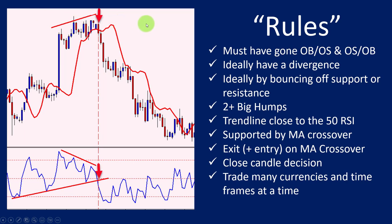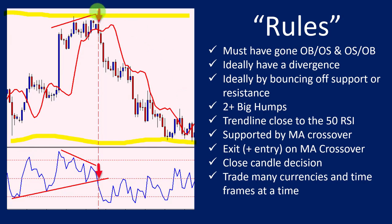A divergence is required. Then ideally you want price to be bouncing off support and resistance. I haven't brought that into account on this chart, but let's say there was resistance over here and support over there — that's another confirmation for this trading signal. If price is bouncing off resistance, that's another confirmation. It doesn't always have to happen, but you need to decide on balance whether there are enough signals to support the trade.